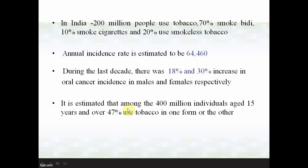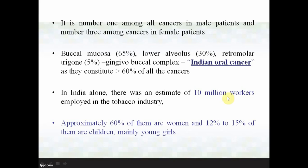It is estimated that among 400 million individuals aged 15 years and over, 47.7% use tobacco in one form or another. Looking at site distribution: buccal mucosa accounts for 65% of total oral cancers, lower alveolus is 30%, and the retromolar region is 5%. The gingivobuccal complex is known as Indian oral cancer as it constitutes more than 60% of cases, due to the peculiar habit pattern in India. In India alone, an estimated 10 million workers are employed in the tobacco industry.